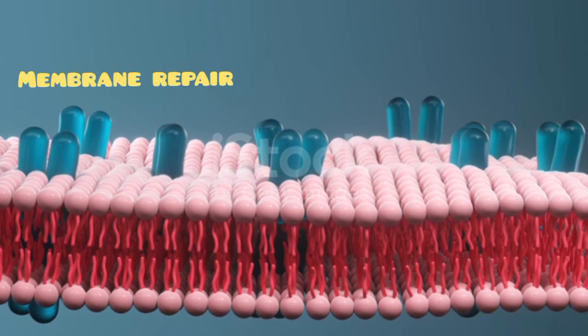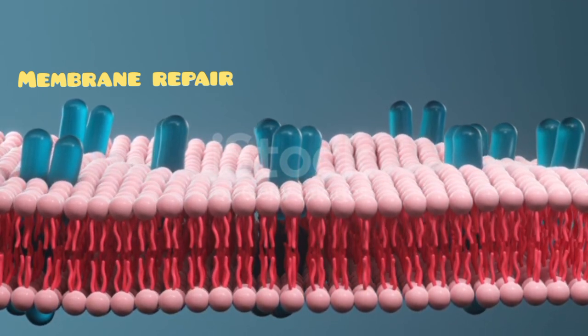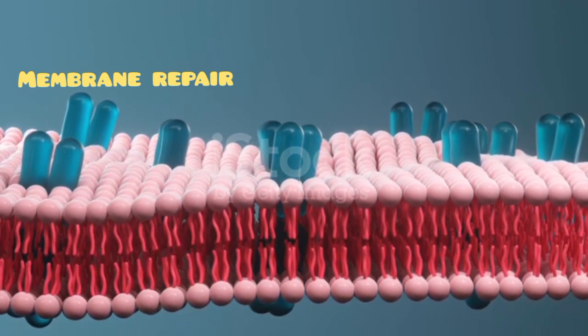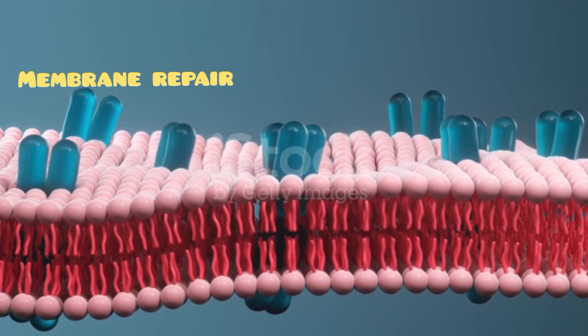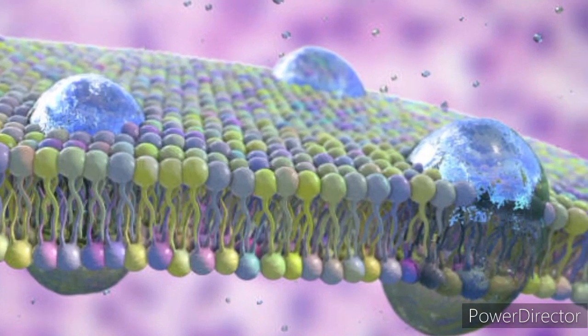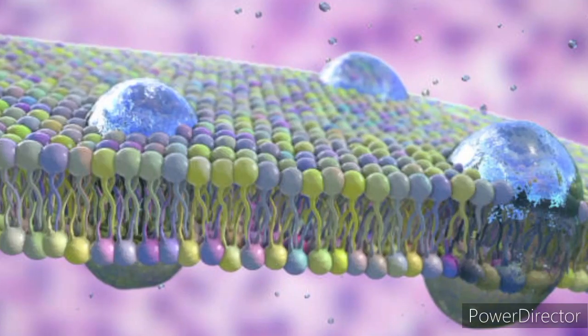Membrane stability and repair: The plasma membrane can self-repair minor damage through vesicle fusion and lipid molecule rearrangement. Cells also have mechanisms to replace damaged membrane components to maintain membrane integrity.